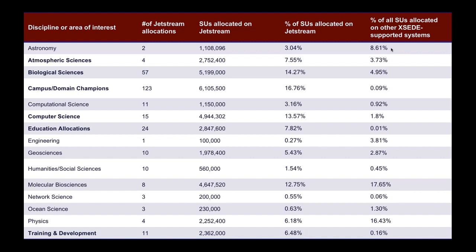Campus champions like Aaron Kulich from Berkeley have brought us a ton of researchers who try it out on his allocation for a month or two, realize it works for them, and then come get their own allocation. It's a good thing for everybody — we're about encouraging science, and if having campus champions with allocations helps researchers, I'm all for it. It lowers the barrier even further.